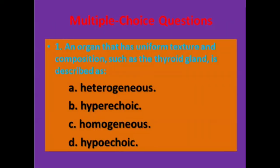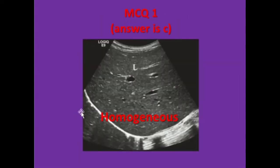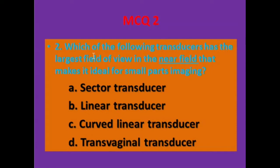The first question: an organ that has uniform texture and composition, such as the thyroid gland, is described as — option A: heterogeneous, B: hyperechoic, C: homogeneous, D: hypoechoic. The answer is C, homogeneous. As in this image, we can see the liver is uniform and homogeneous.